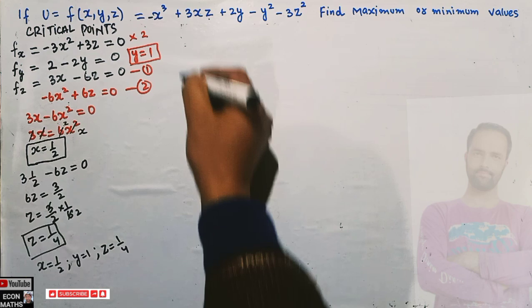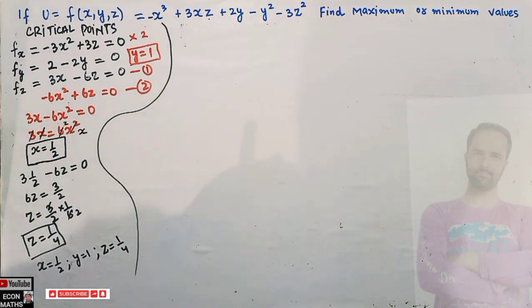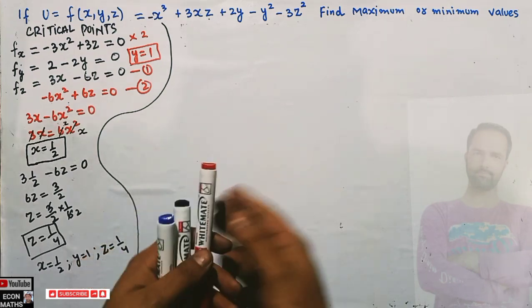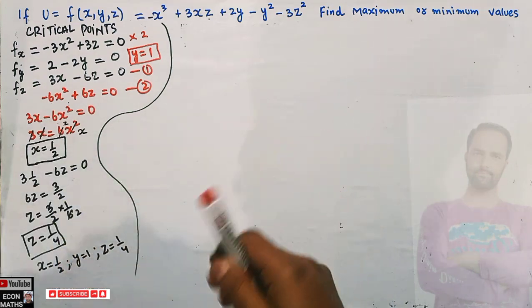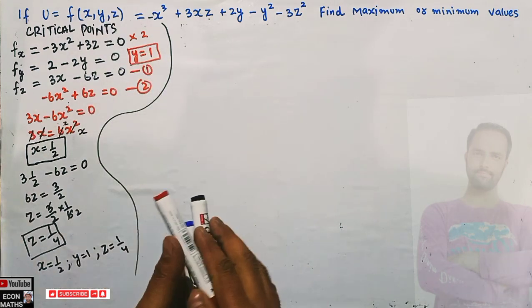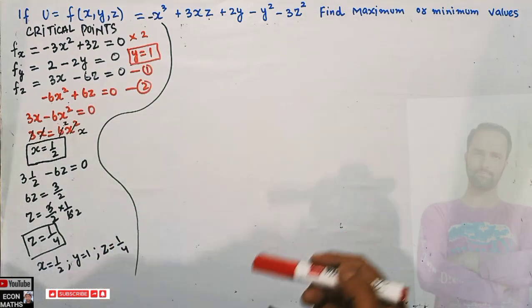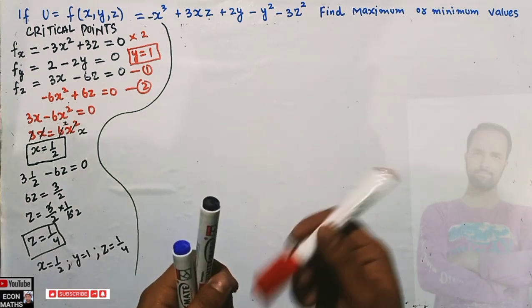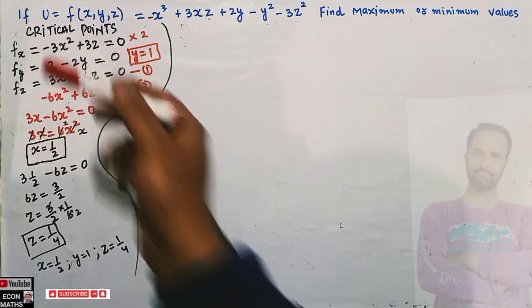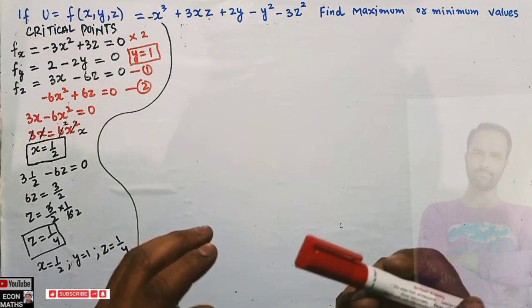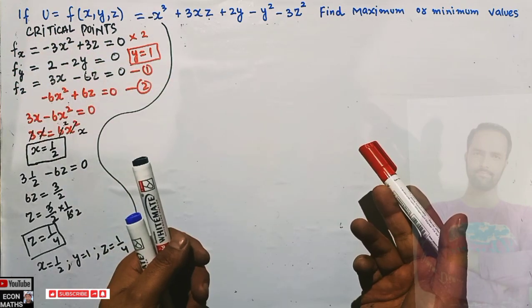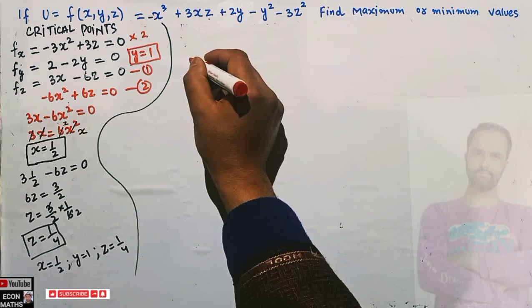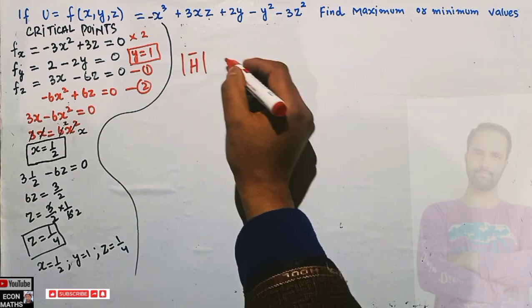The first step in finding the maximum or minimum is taking partial derivatives with respect to x, y, and z, solving them simultaneously by setting the three equations to zero, and finding the critical point. Now to check whether we have a maximum or minimum, we take the second-order partial derivatives and form the Hessian matrix H.